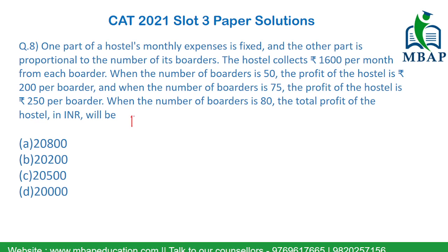Let the fixed component be f and the variable component per border be v. So the first equation is: f plus 50v equals 50 into 1400, which is 70,000. The second equation is: f plus 75v equals 75 into 1350, which is 1,01,250. The cost per border when 75 borders are there is 1350, since 1600 minus 250 equals 1350.